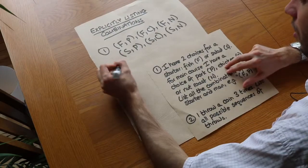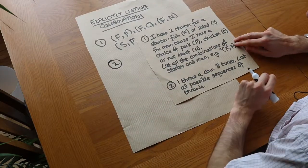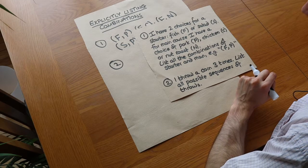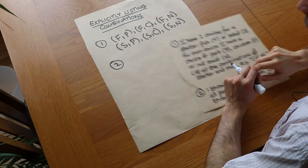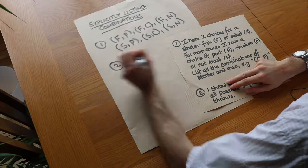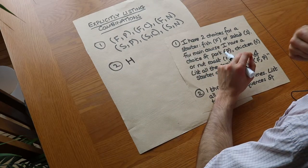What about this second one? I throw a coin three times. List all possible sequences of throws. Now I'm going to fix the first throw as heads and then consider all the possibilities for the second and third throw.